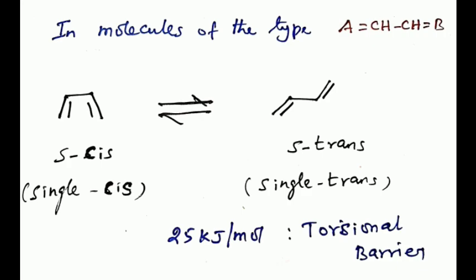In molecules of the type A double bond CH single bond CH double bond B, the fully eclipsed conformation with a dihedral angle of zero degrees is termed s-cis, while the conformation with a dihedral angle of 180 degrees is called s-trans. This is a butadiene molecule.